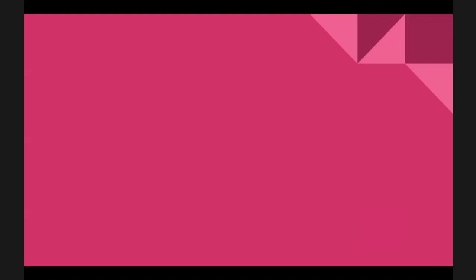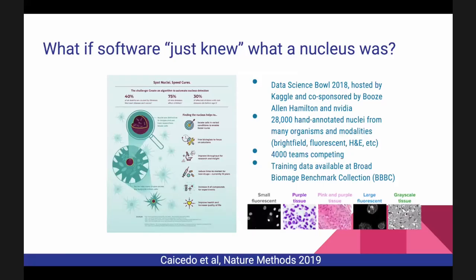That's the state of the field, but we always want to know how we can push further. Are there ways to do a better job of finding objects? There are a lot of tunable parameters needed to do segmentation well. And if you're a biologist studying your biology who doesn't really care about image analysis — you just want to answer a question — why should you need to learn all of those things?